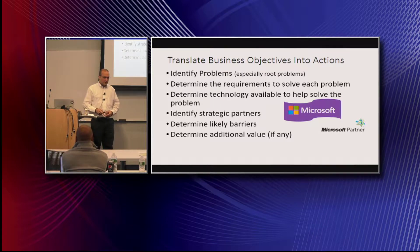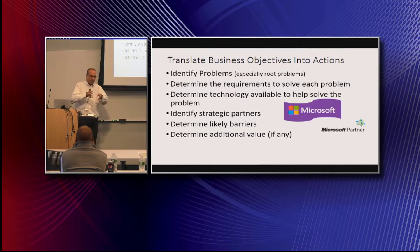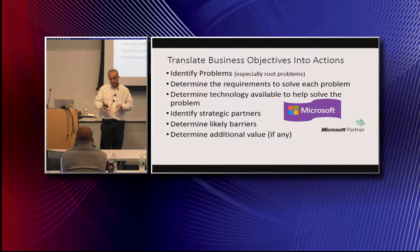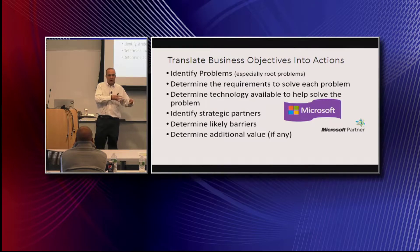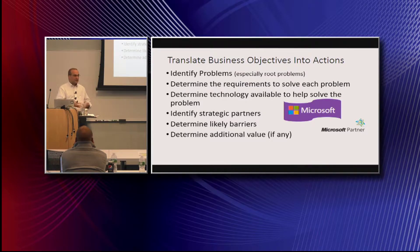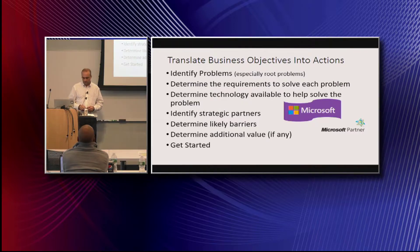Determine additional value if any — and most people don't do this. You understand the value of doing the project, but who else could benefit? You might be working on a project for IT, but what business units could also be significantly impacted in a positive way? Find all of those, because they can be your champions to get through some of the barriers you've already identified. Then, most importantly — get started. Get started now.